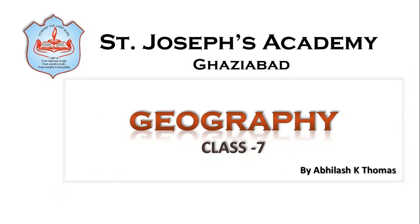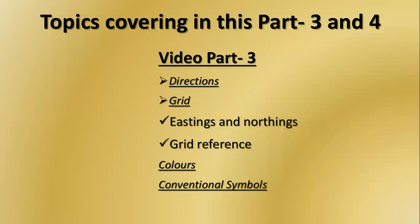Welcome to Sanjosak Academy video classes. This video is about geography for class 7. We already discussed chapter 1 in two parts. This is the third part. In this video, we are going to study about the representation of geographical features — specifically direction, grid, eastings and northings, grid reference, colors, and conventional symbols. Let's start the topics one by one.